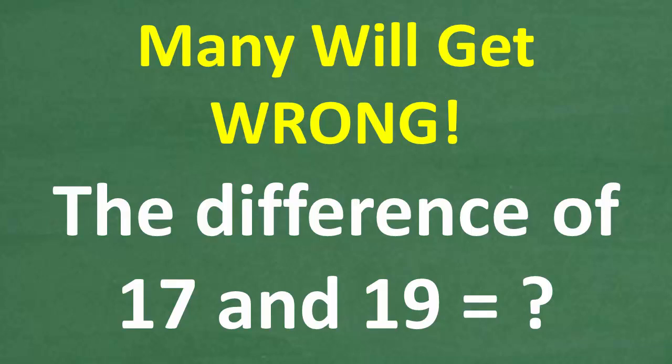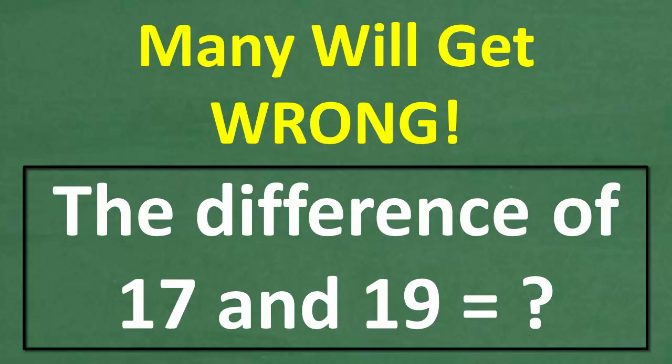So a lot of people are going to be shocked that they're going to get this basic math problem wrong. And the problem is the following: the difference of 17 and 19 is equal to what number?